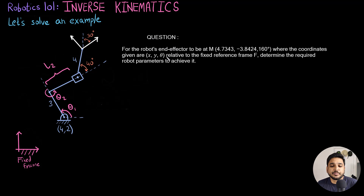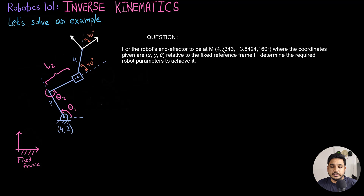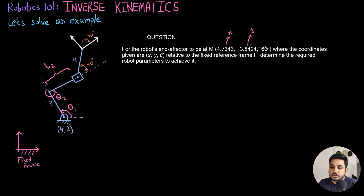Now coming to the question: for the robot's end effector to be at point M, which has a given x, y, and orientation relative to the fixed reference frame, determine the required robot parameters to achieve it. This represents my end effector's moving frame. The x coordinate, y coordinate, and the angle 160 degrees represent the orientation of the end effector — let me mark it as theta.